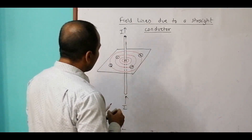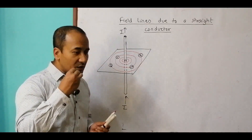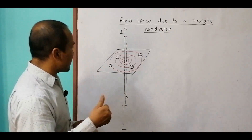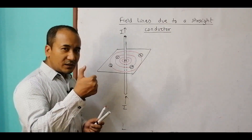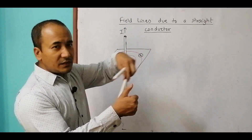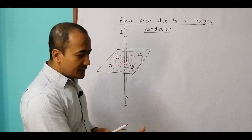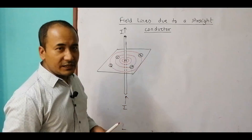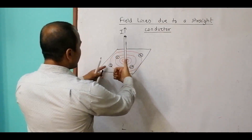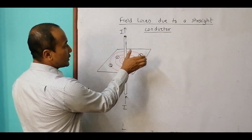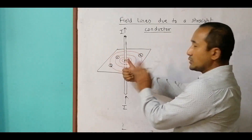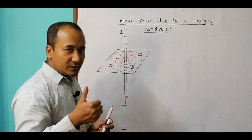Oersted then used a rule called the right-hand thumb rule, which belongs to Ampere. It says: if we denote the conventional current by the direction of the thumb, the direction of the other fingers will give the direction of the magnetic field lines. So if the thumb points in the direction of current, the curling fingers give the direction of the magnetic field lines — here approaching us and there going away from us.